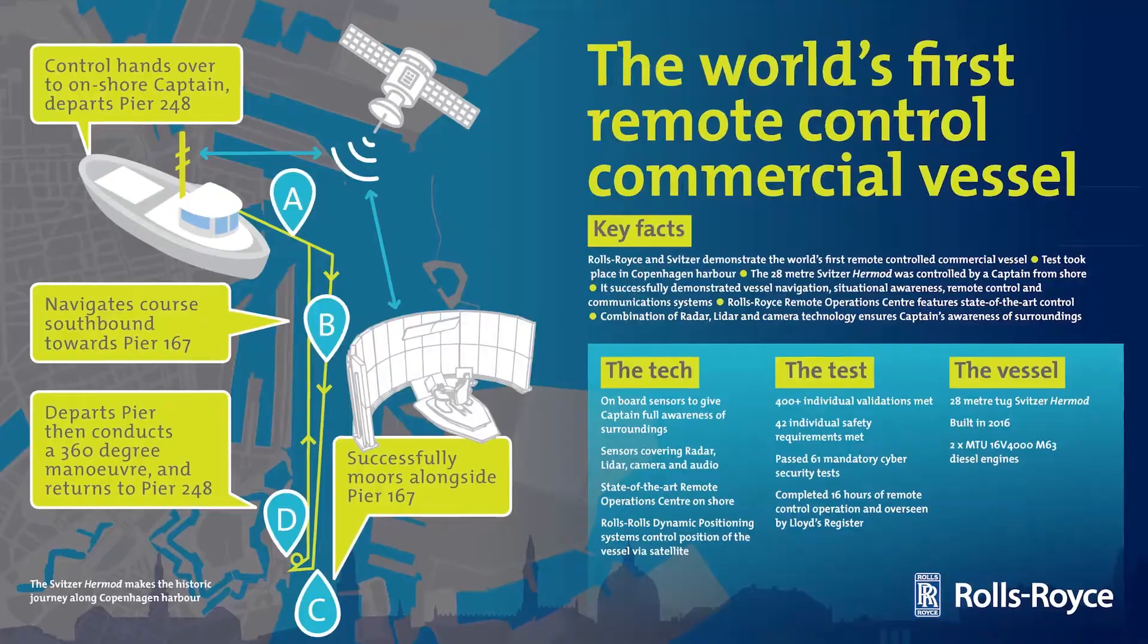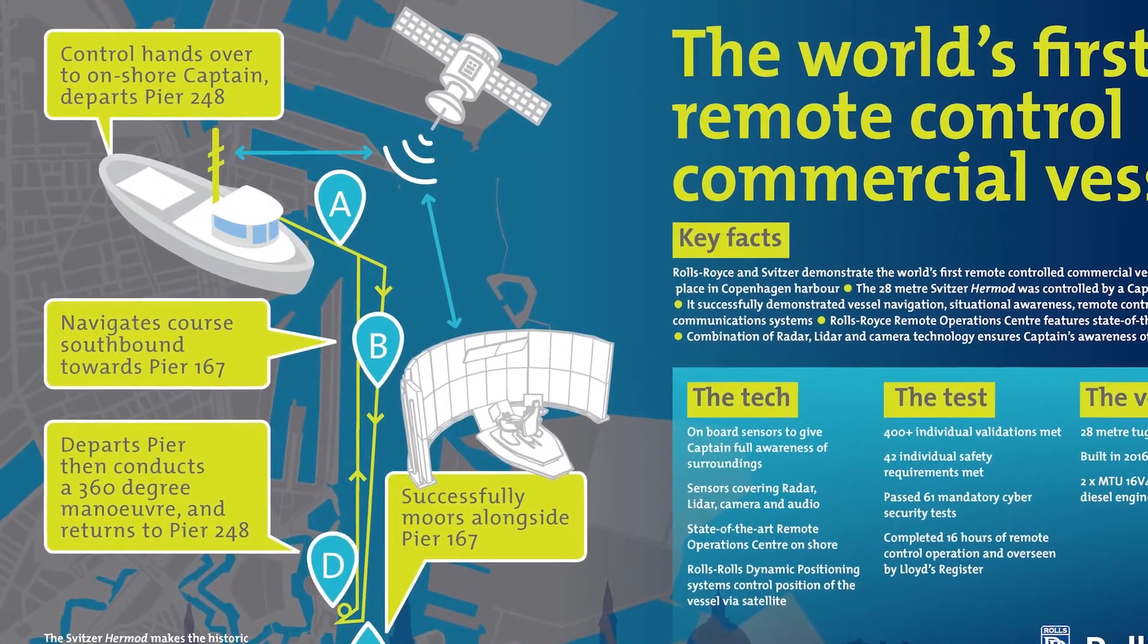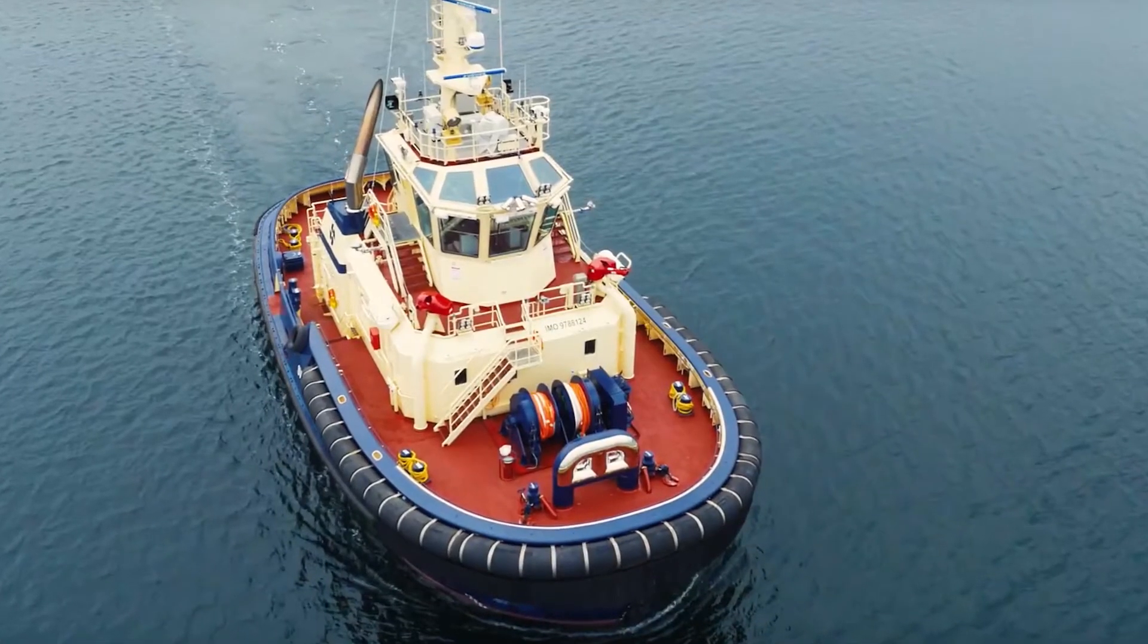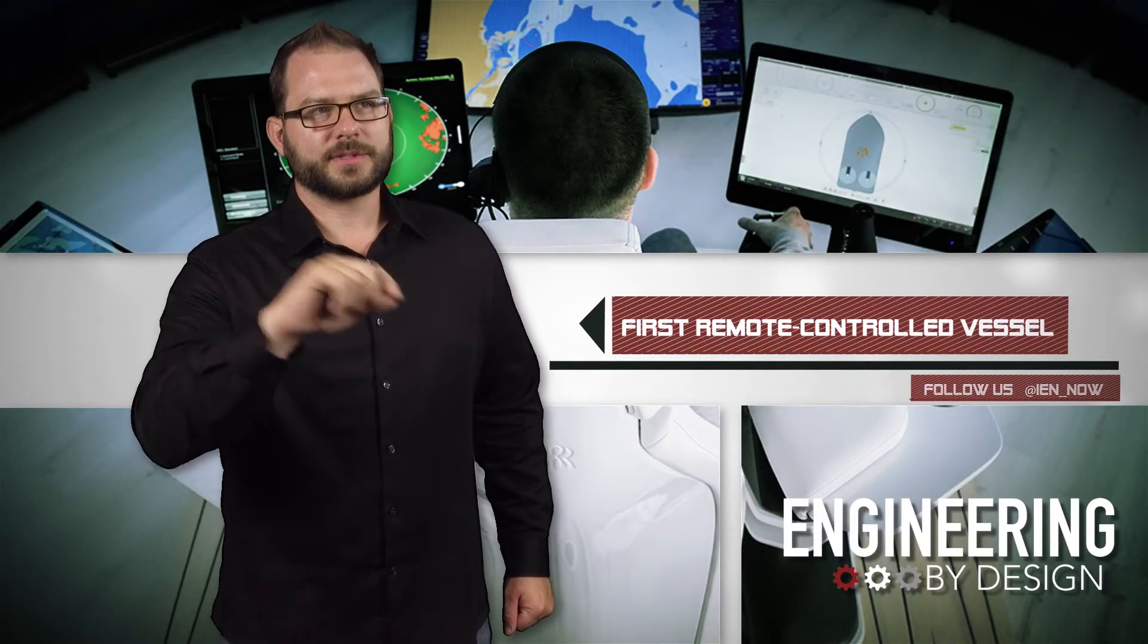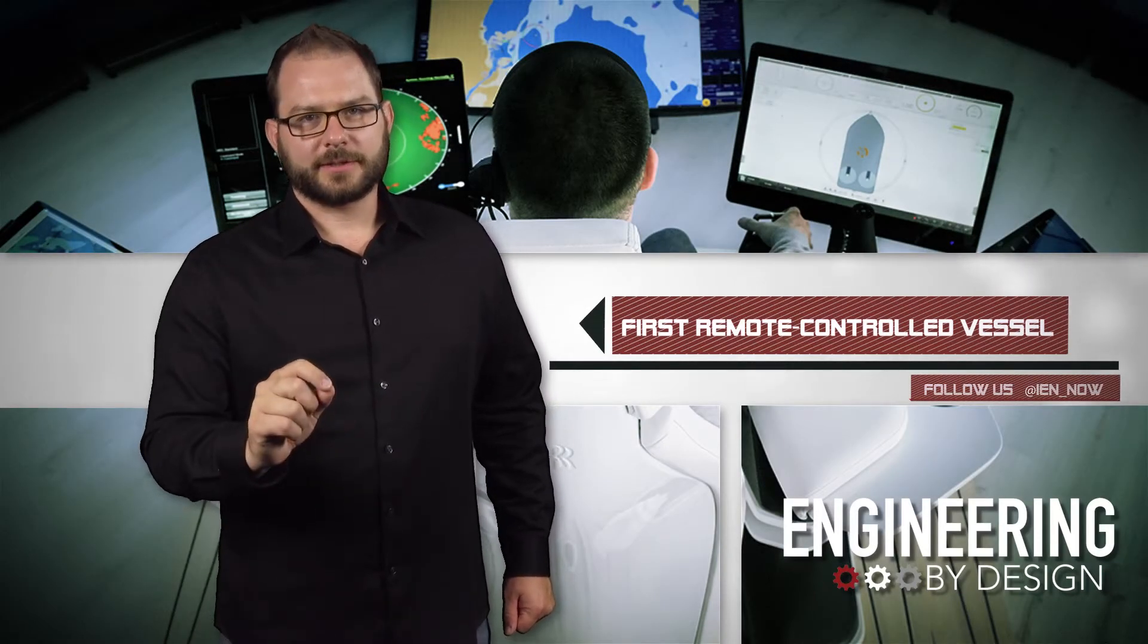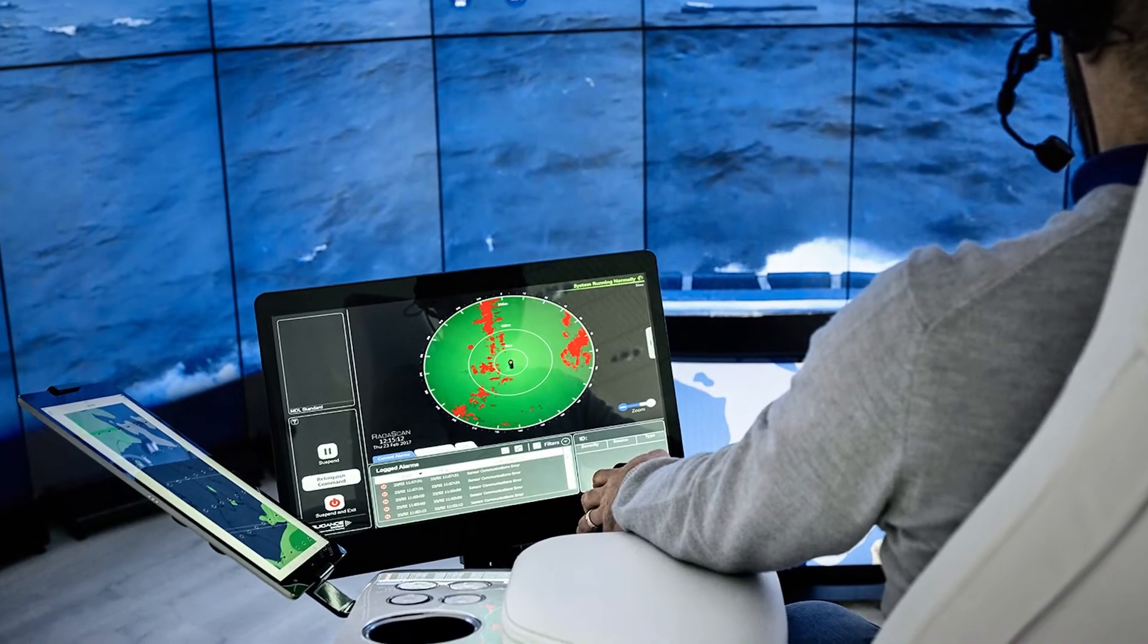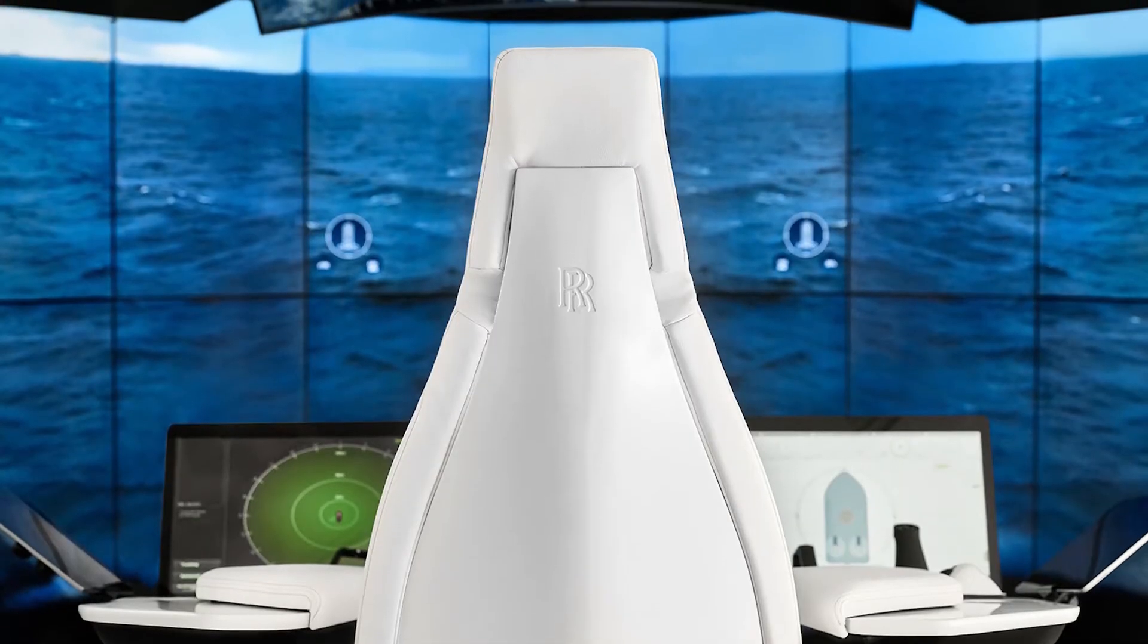The captain controls the vessel's position via satellite using the Rolls-Royce dynamic positioning system. The vessel also has a pair of Rolls-Royce diesel engines, 2,000 kilowatts at 1,800 RPM. And that sounds big. Big engines. The test successfully demonstrated vessel navigation, situational awareness, remote control, and communication systems.